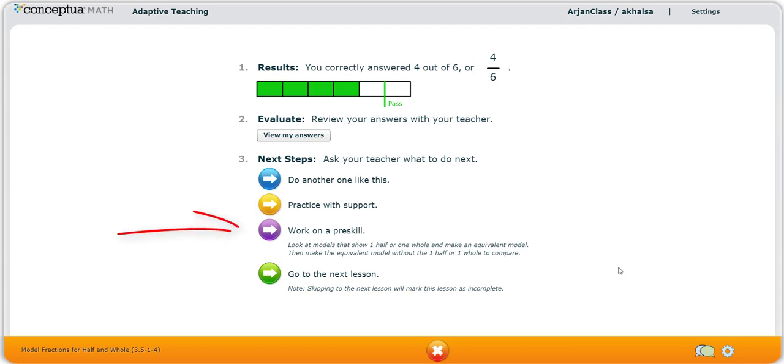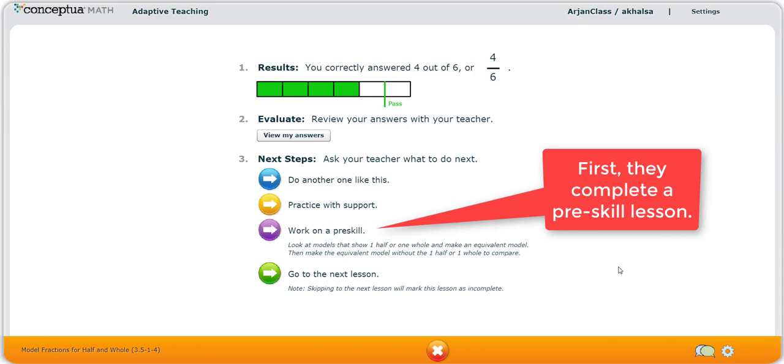Or if they need to work on a pre-skill, they'll choose the purple activity. If they do the pre-skill, they're going to cycle back to that blue lesson, that More lesson. So they get a complete cycle and they complete the equivalent of the standard activity.